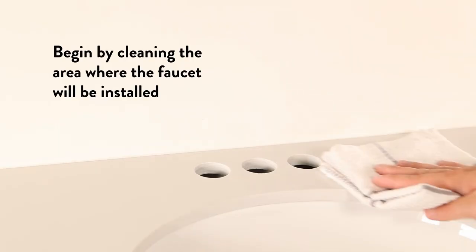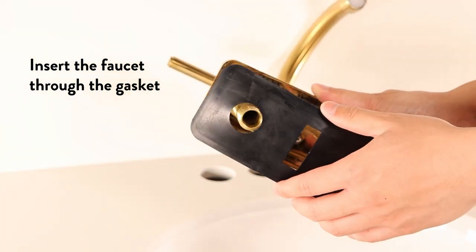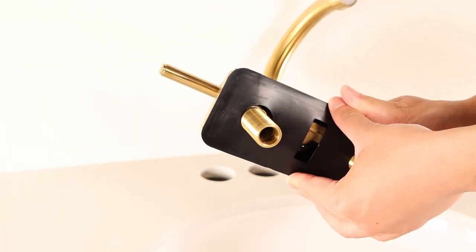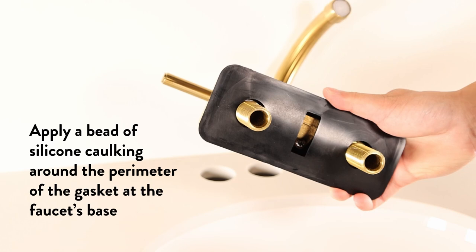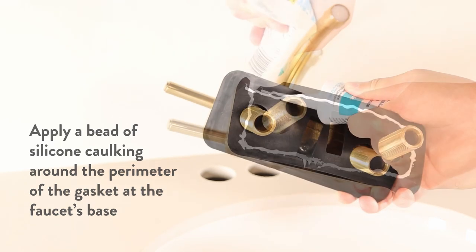Begin by cleaning the area where the faucet will be installed. Insert the faucet through the gasket. Apply a bead of silicone caulking around the perimeter of the gasket at the faucet's base.